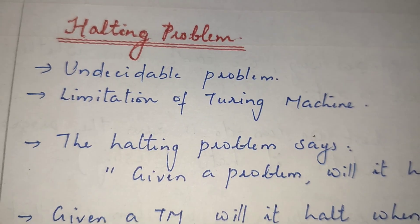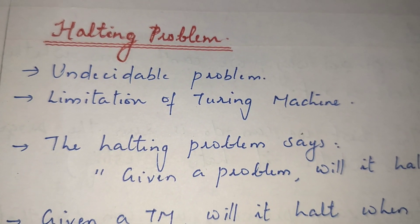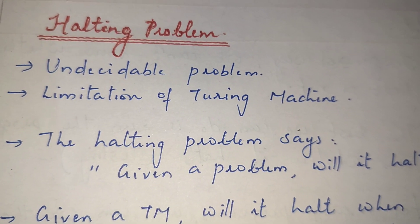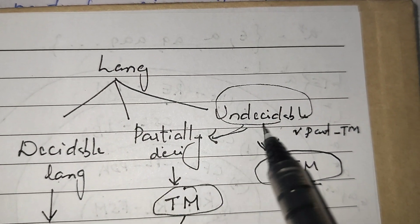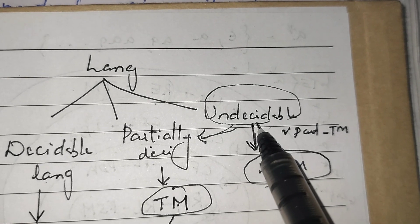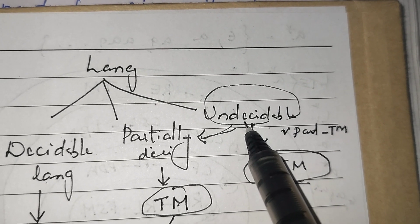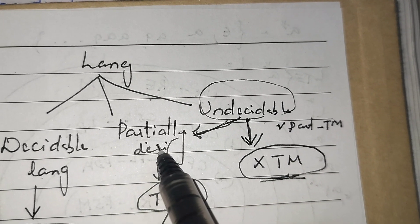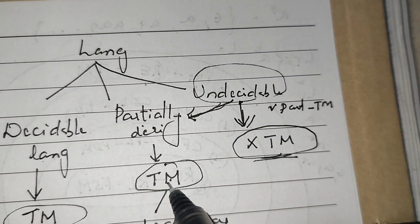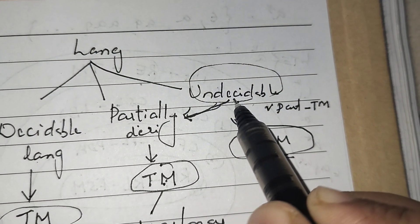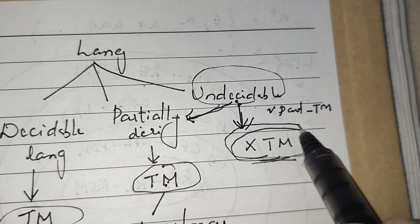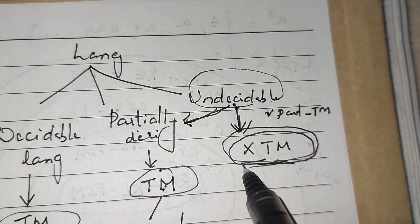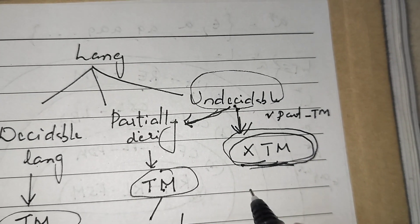The next topic is the halting problem, which is one of the limitations of a Turing machine. When we discussed decidable, partially decidable, and undecidable languages, we noted that an undecidable language may be partially decidable — in which case a Turing machine exists — but if it is not even partially decidable, there is definitely no Turing machine. That is the halting problem.